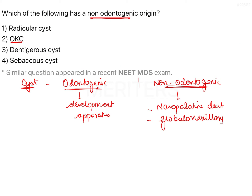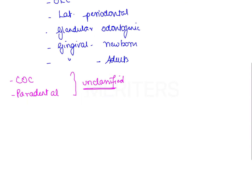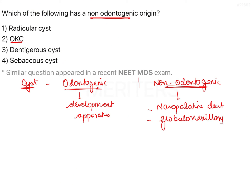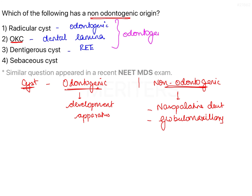Now that we are familiar with the different odontogenic cysts and their classification, let's return to the question. The first option, radicular cyst, is derived from rests of Malassez and is odontogenic in origin. The second option, OKC, is derived from rests of the dental lamina — also odontogenic. Dentigerous cyst is derived from reduced enamel epithelium. Therefore, the first three options are odontogenic in nature. Option 4, sebaceous cyst, is non-odontogenic — it is not related to tooth or tooth-related structures.